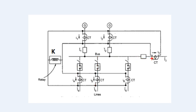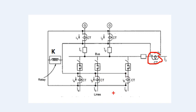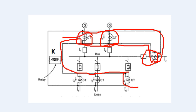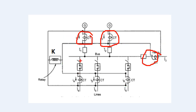We place CTs on each connection — one CT on each incoming and outgoing side. We connect them together at a common junction for differential protection.